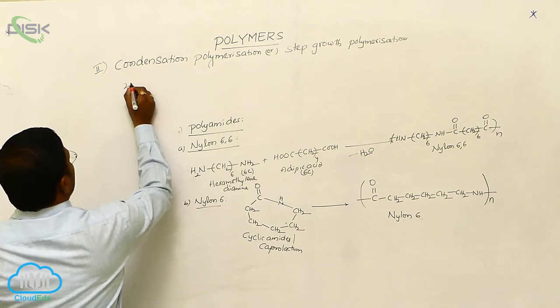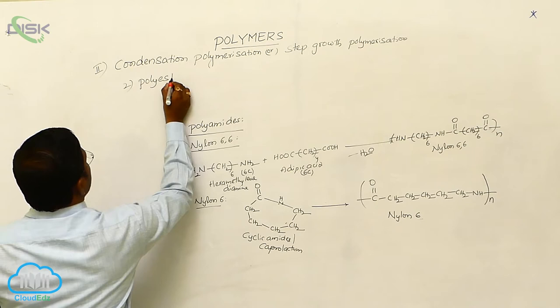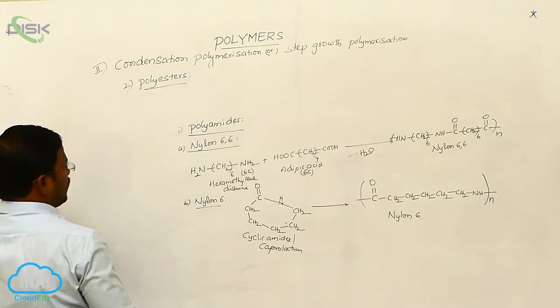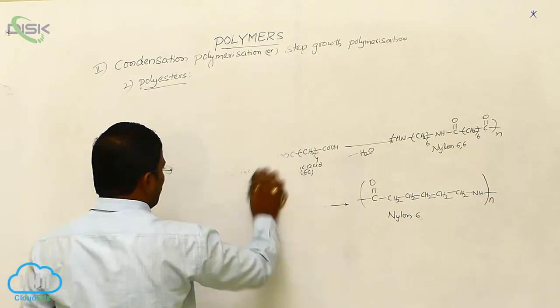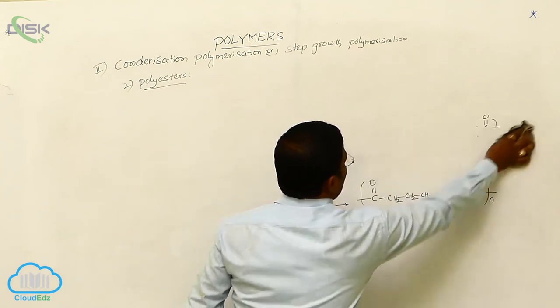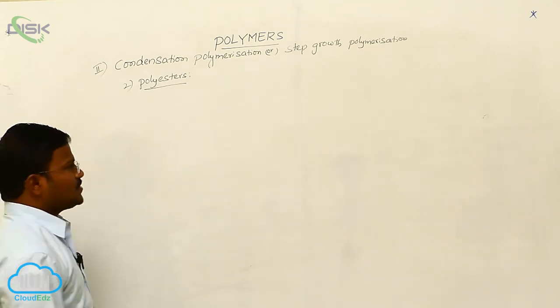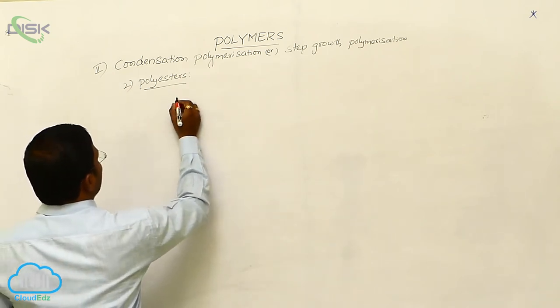The second type is polyesters. What are polyesters? Generally, C=O-O type of functionality if identified. Such functionality is called polyesters. Let us explain here.